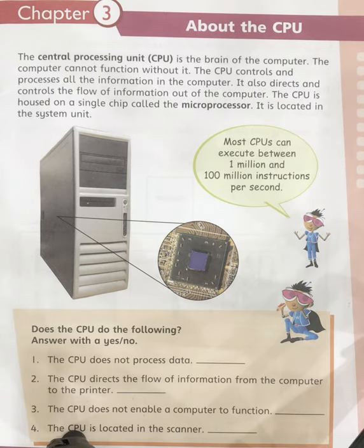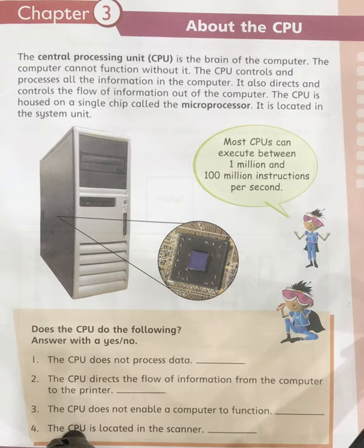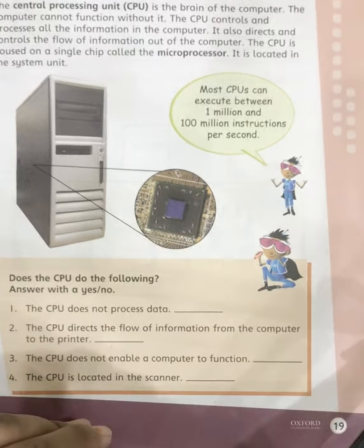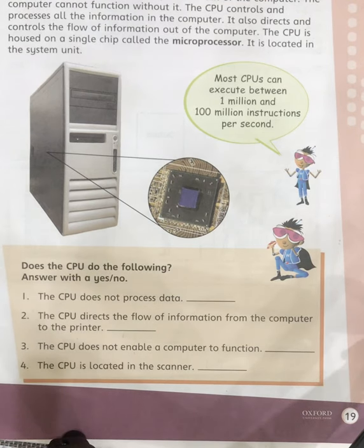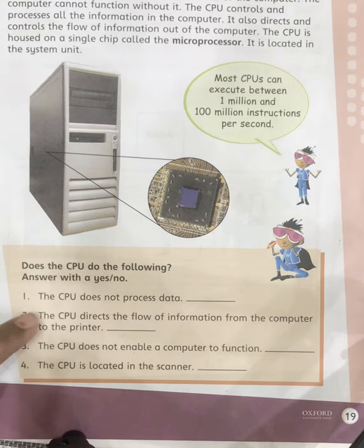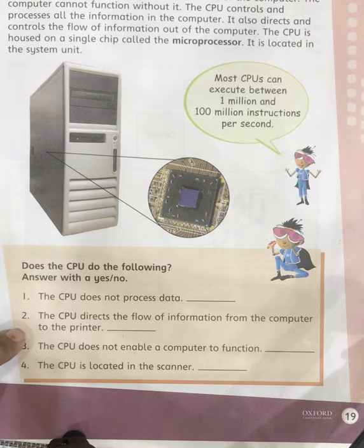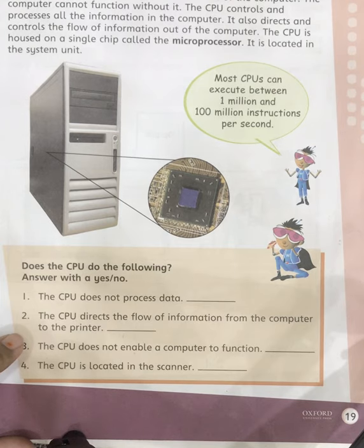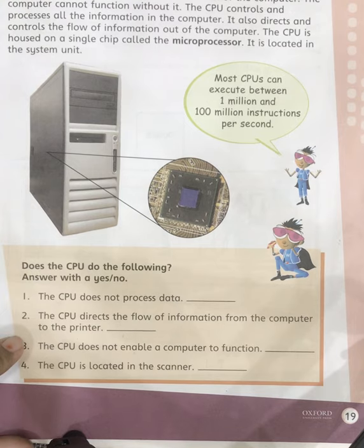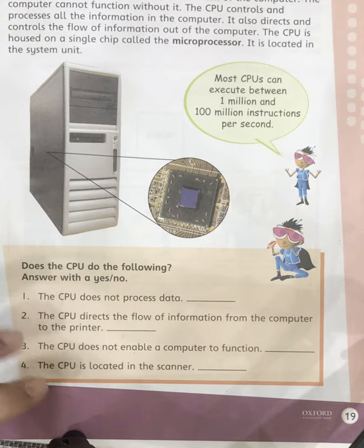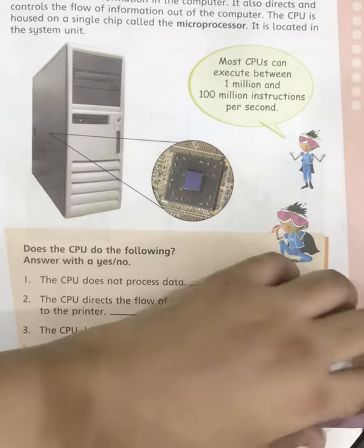Now here are some yes-or-no questions — I'm giving you 10 minutes. Number one: the CPU does not process data. Number two: the CPU directs the flow of information from the computer to the printer. Number three: the CPU does not enable a computer to function. Number four: the CPU is located in the scanner. You will tell me the answers.